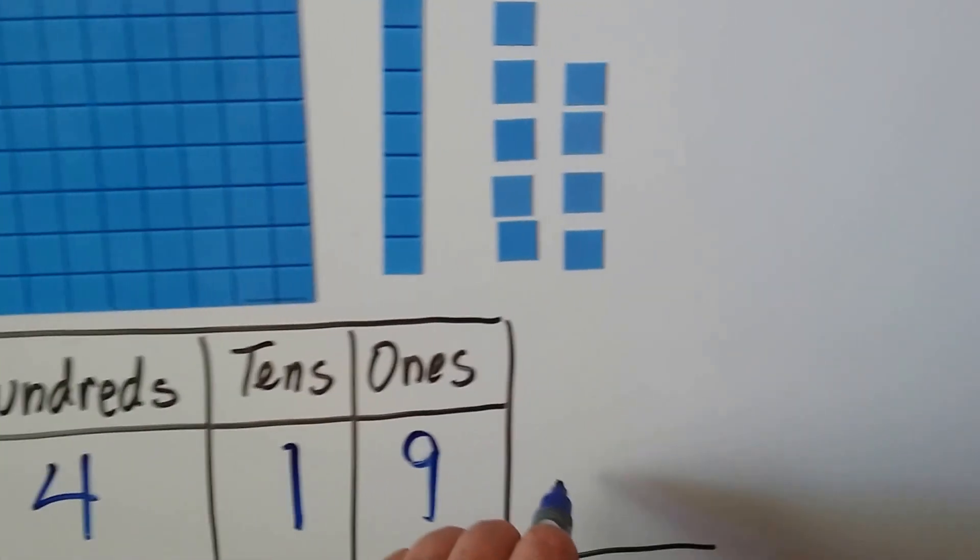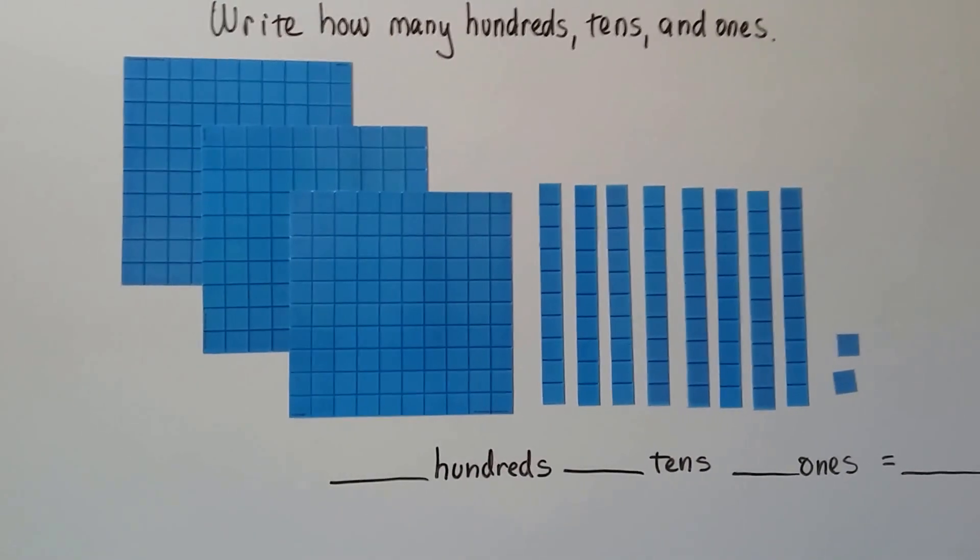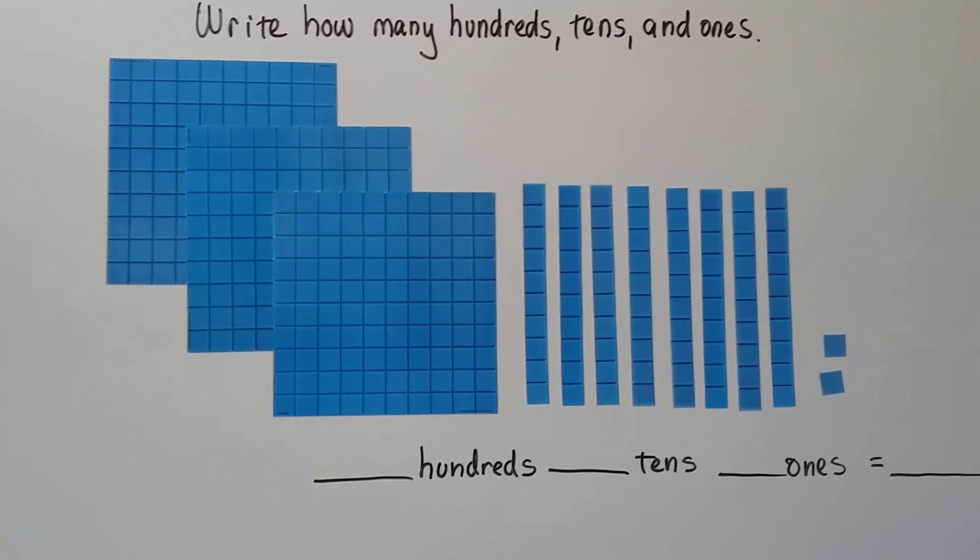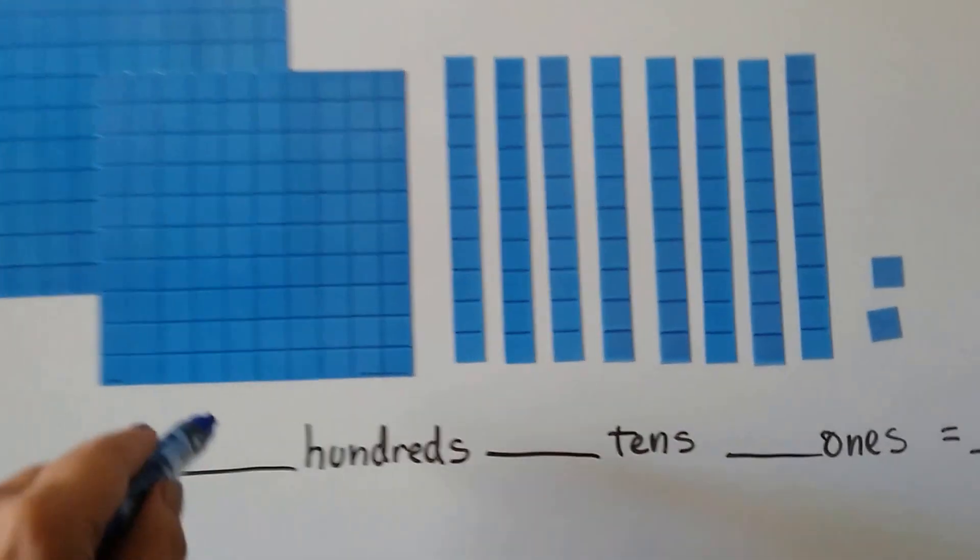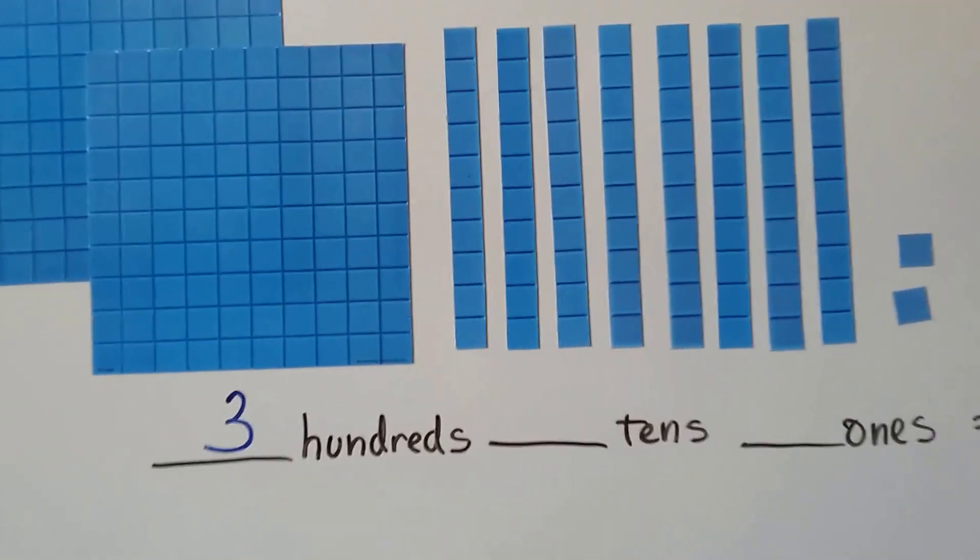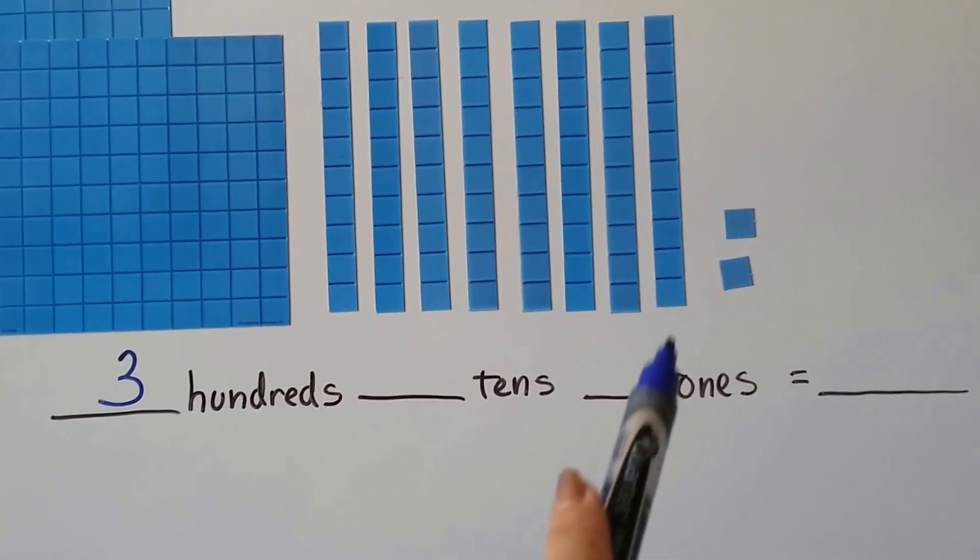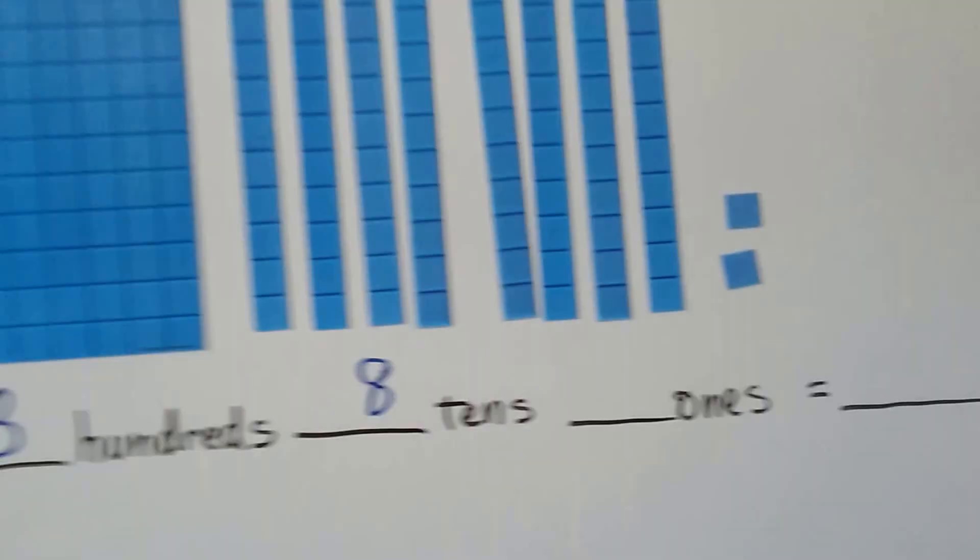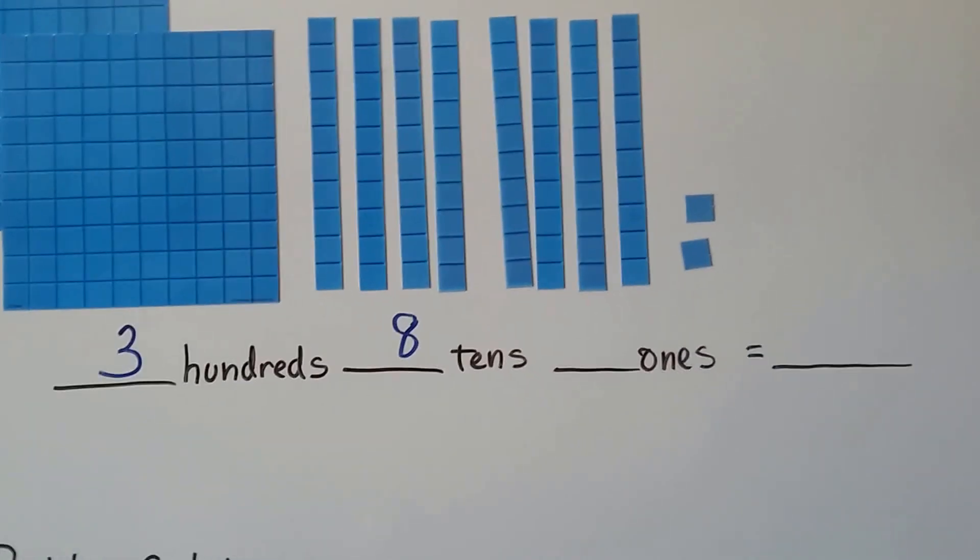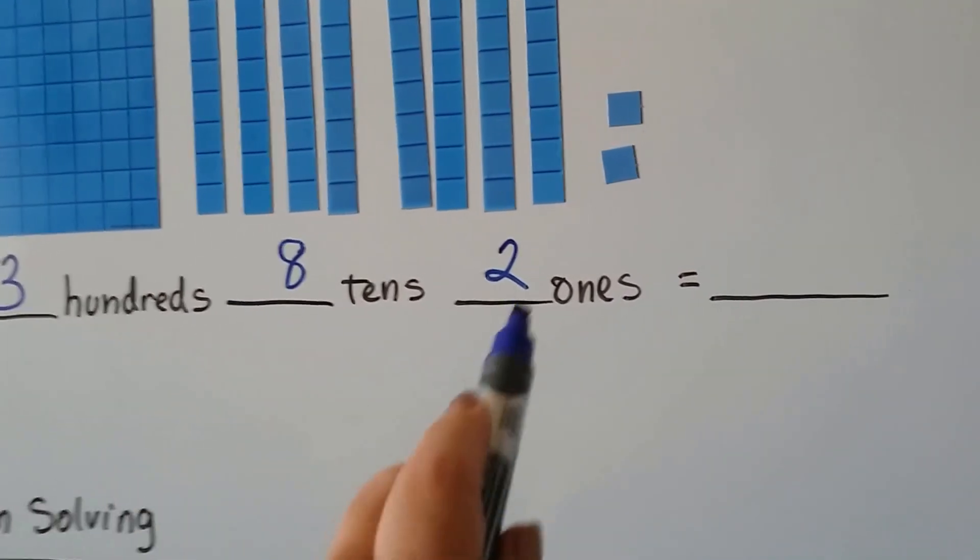And the number we have is four hundred nineteen. We write the four, a one, and a nine. We have four hundred nineteen. Let's take a look at this one. We can write how many hundreds, tens, and ones we see. How many hundreds are there? We can count them: one hundred, two hundred, three hundred. There's three hundreds. How many tens? One, two, three, four, five, six, seven, eight tens. And there's two ones, and the number we have is three hundred eighty-two.